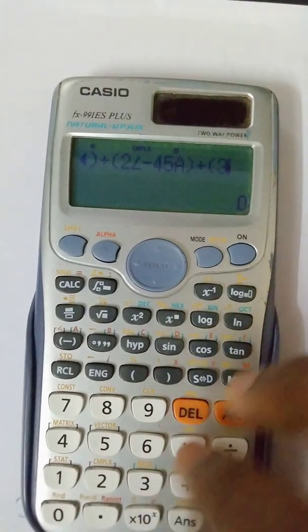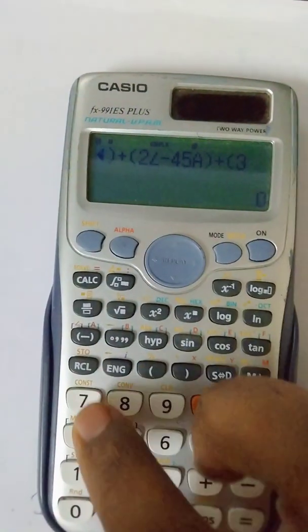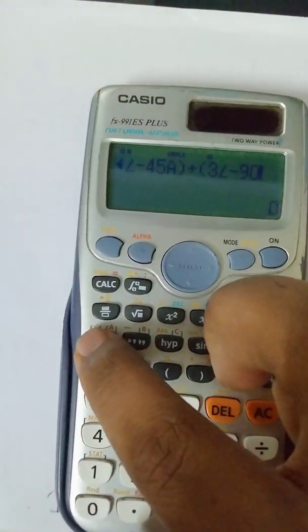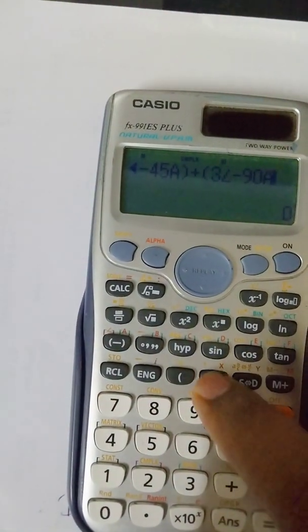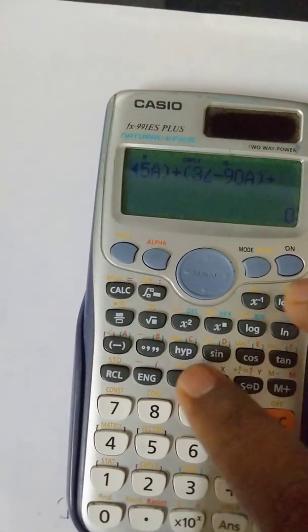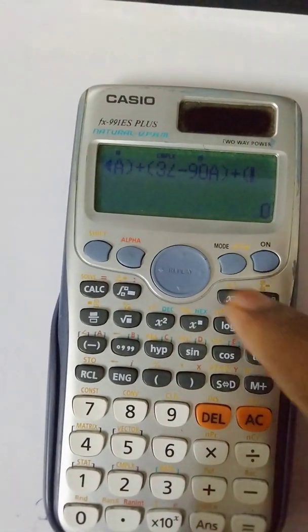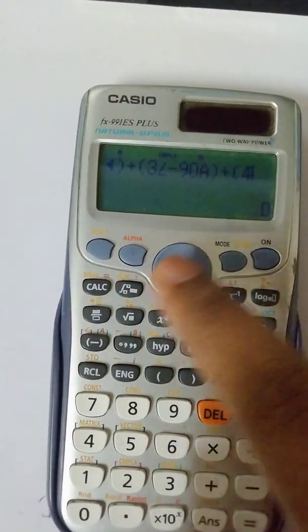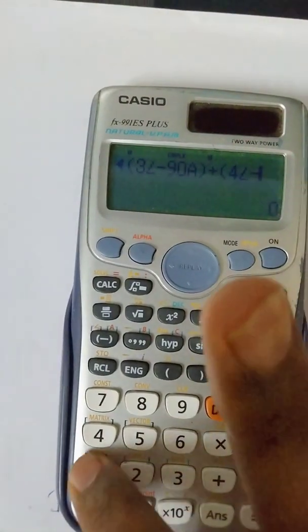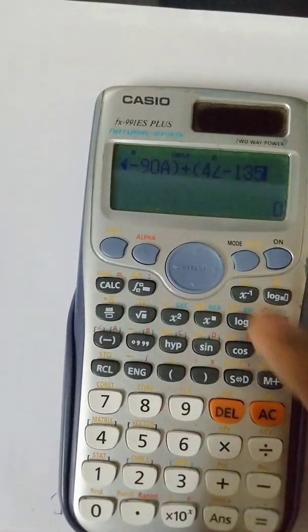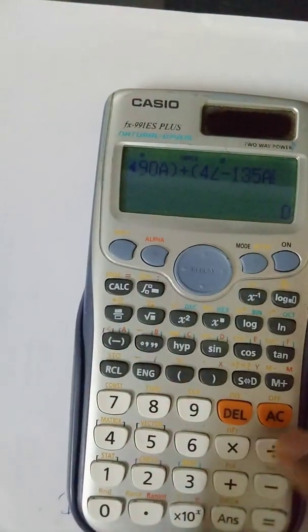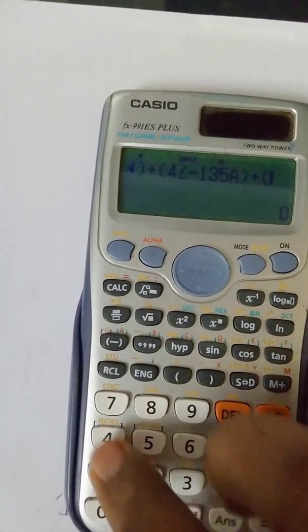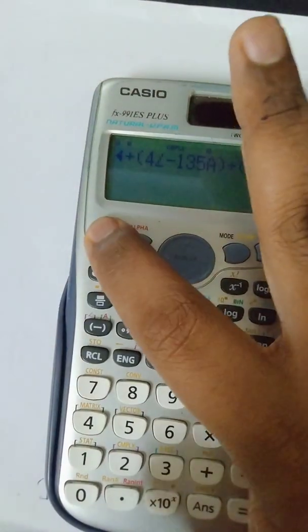The fourth point is 4, the fourth sample - shift, angle minus 135 alpha A, plus. The fifth sample is 4, the fourth point is 4, the fifth point is 4, therefore shift angle minus 180 alpha A.